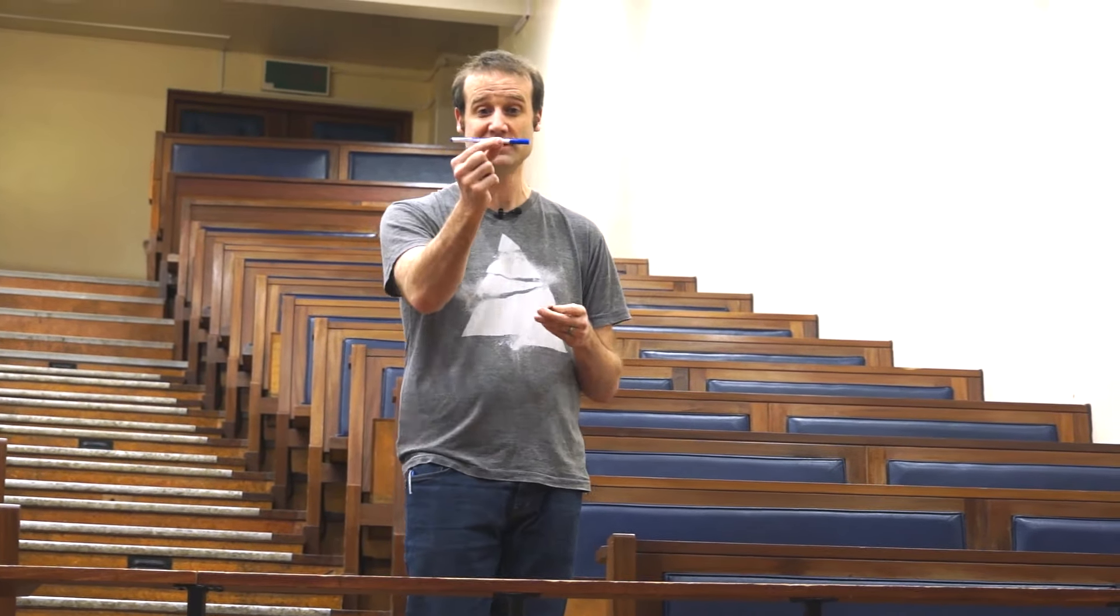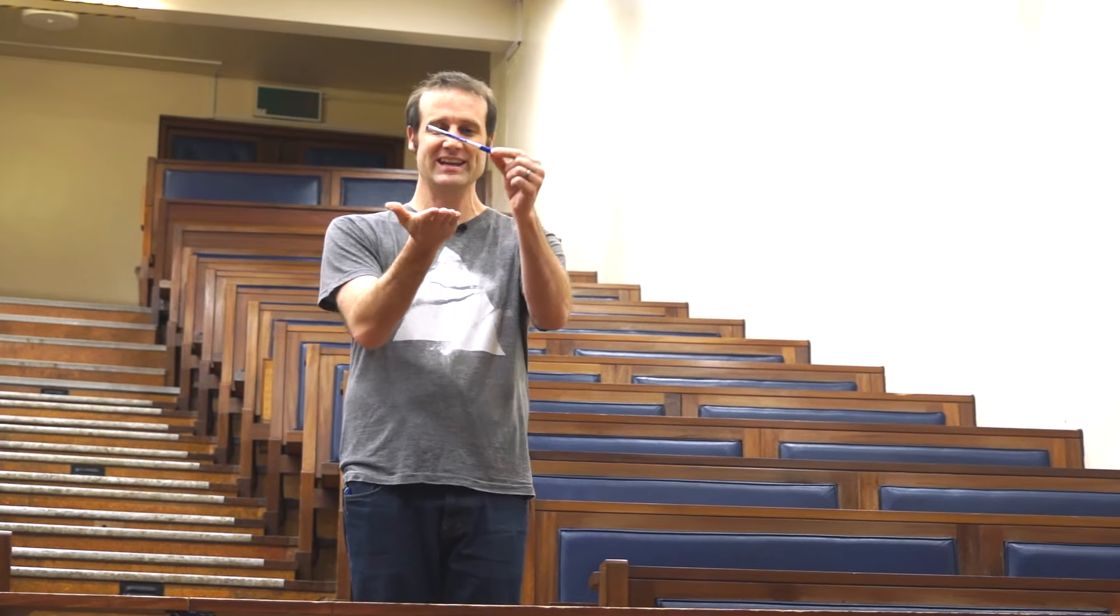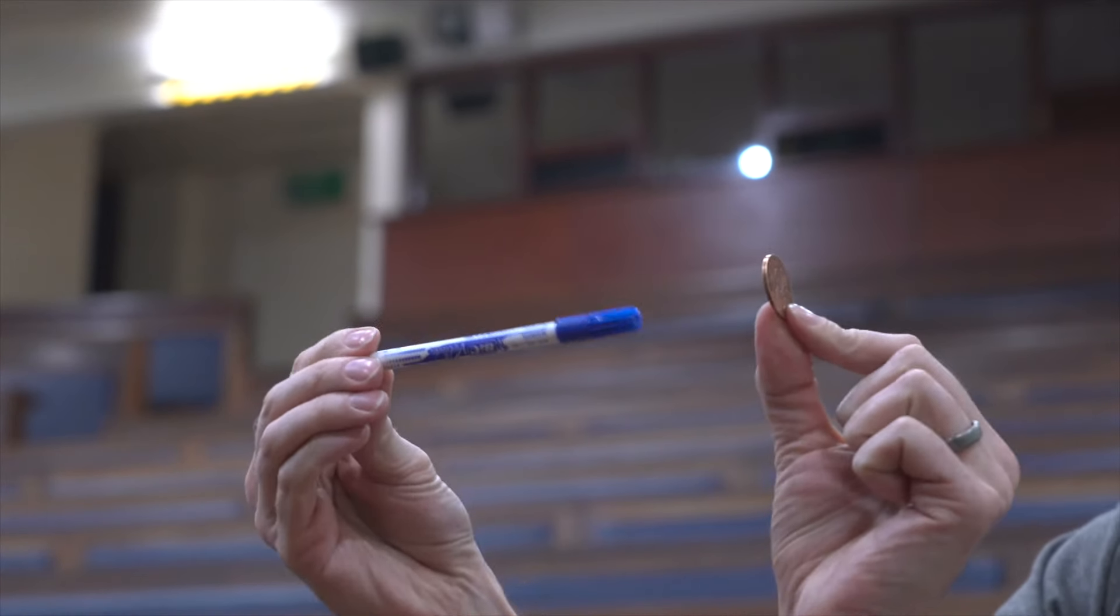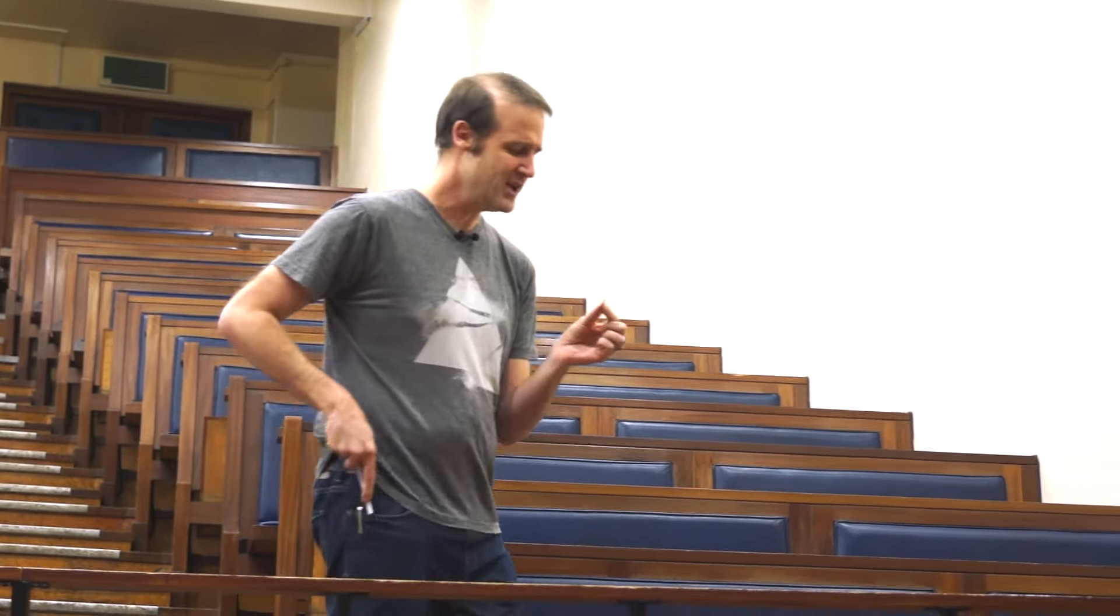But then I was thinking about it, and something like a pen is the other extreme. It's a very long cylinder, and if you flip a pen, it's going to land on the edge. And there's like a trivial chance, if this was a coin, you'd get heads or tails.